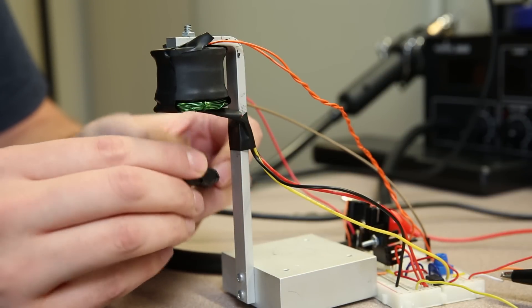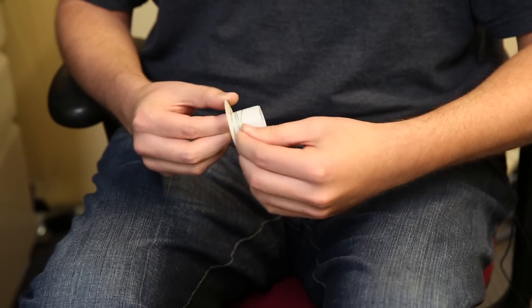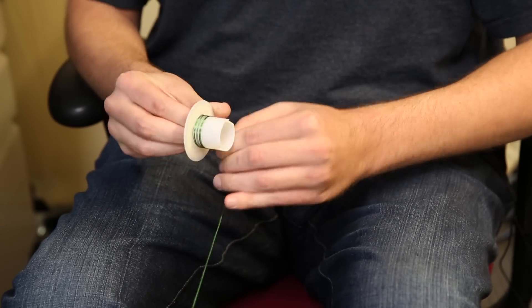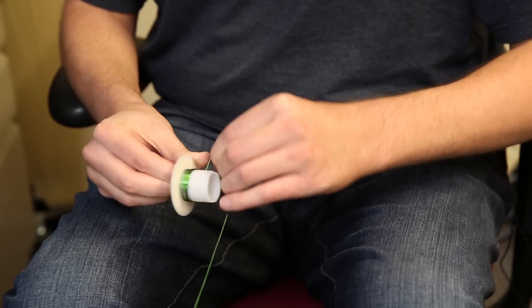To make the air core transformer for the wireless power transfer, I wound around 25 turns of magnet wire around a 1 inch diameter wire spool.